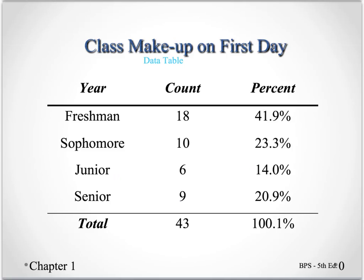This would be a four-year school because we have freshmen, sophomores, juniors, and seniors. We have the count — how many freshmen, how many sophomores, how many juniors, and how many seniors — and then we have the percents. To get this percent, they've done 18 divided by the total of 43.